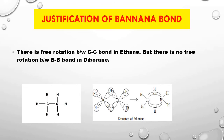How can we say that a banana bond exists in diborane? In diborane, one partially filled orbital of one boron atom and one empty orbital of another boron atom overlap to form a banana bond. There is one partially filled orbital of one boron atom, one empty orbital of the other boron atom, and one partially filled orbital of a hydrogen atom — these overlap together to form the banana bond.